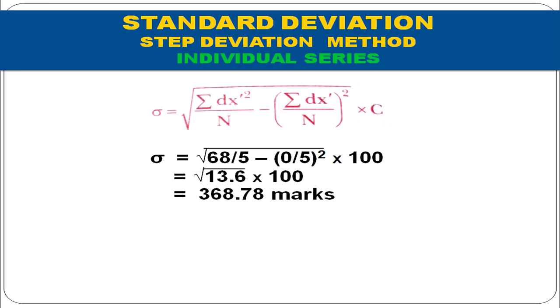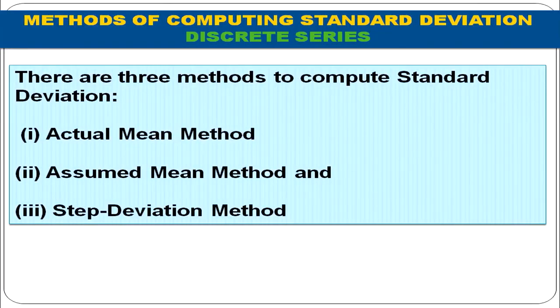Up till now, we have done standard deviation by four methods in individual series. Now we are going to discuss and calculate standard deviation in case of discrete series. In this case, there are three methods: actual mean method, assumed mean method, and step deviation method.